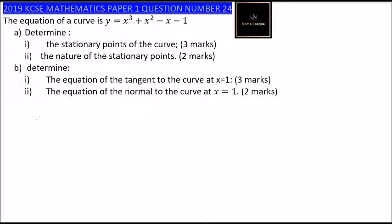Question number 24: the equation of a curve is y equals x cubed plus x squared minus x minus 1. Part (a): determine the stationary points of the curve. The stationary points are where the curve makes a turn. This is a cubic function, so the stationary point is the turning point. At this point the gradient is equal to 0, so we need to differentiate to get the gradient.